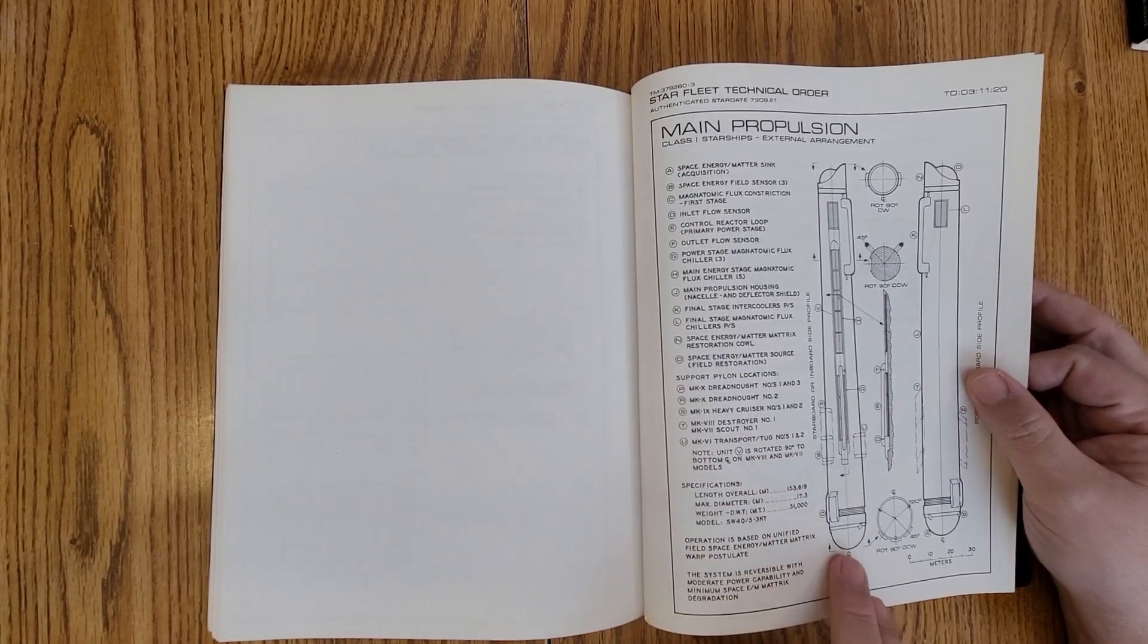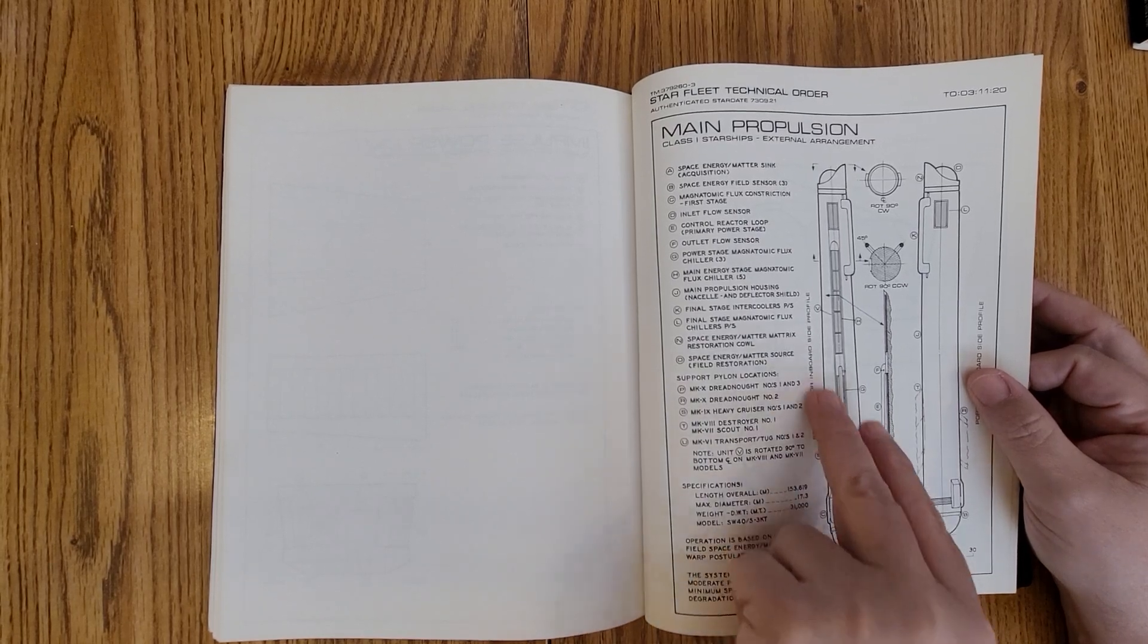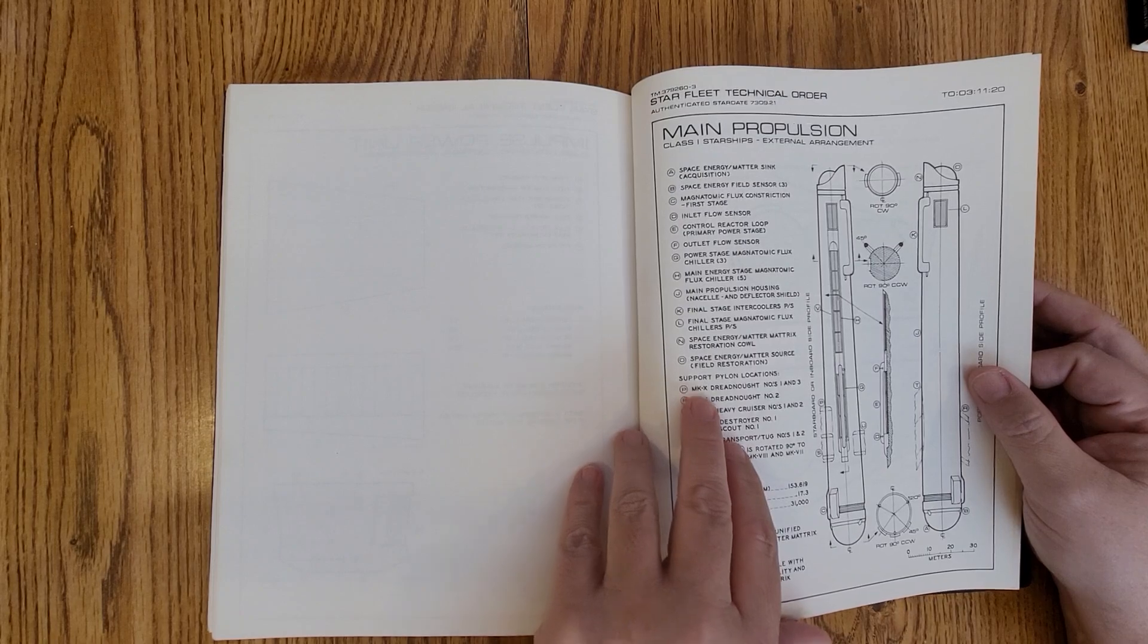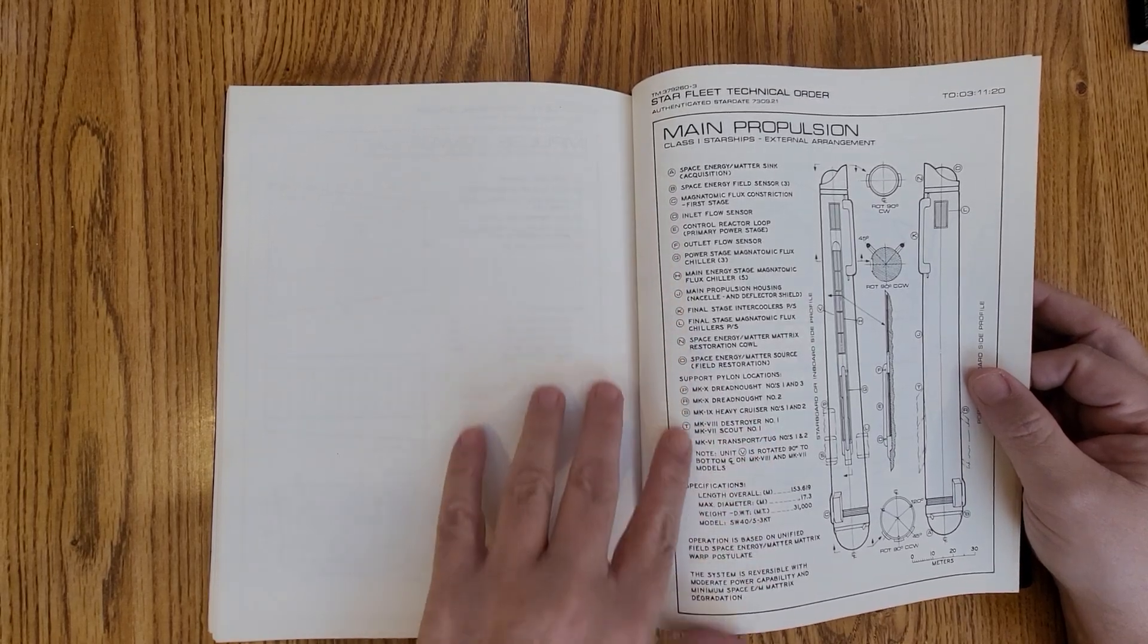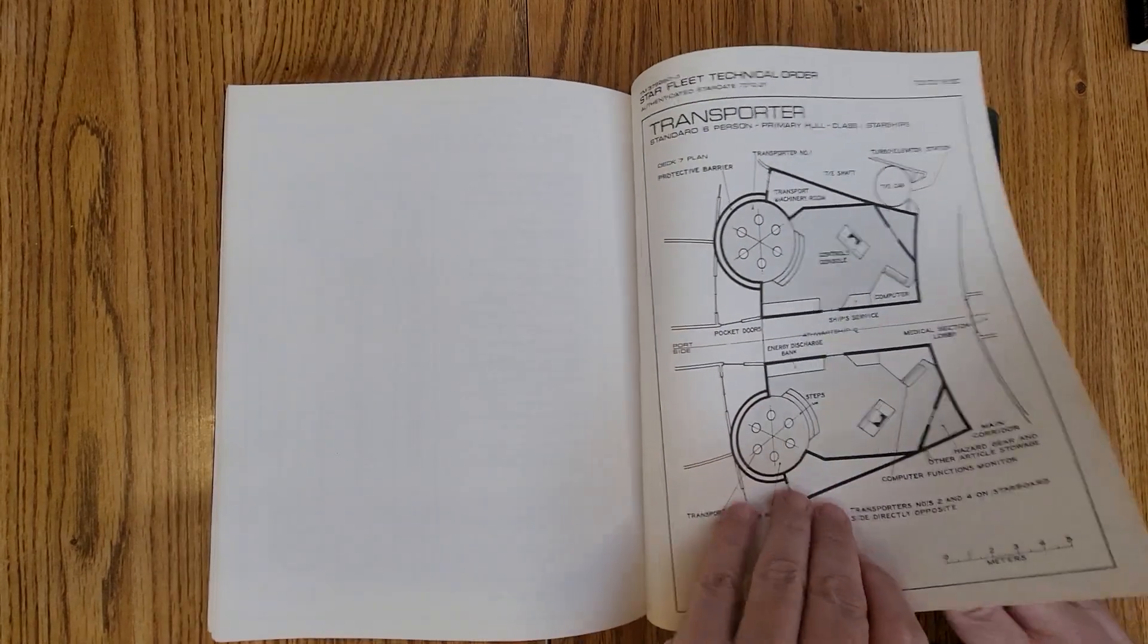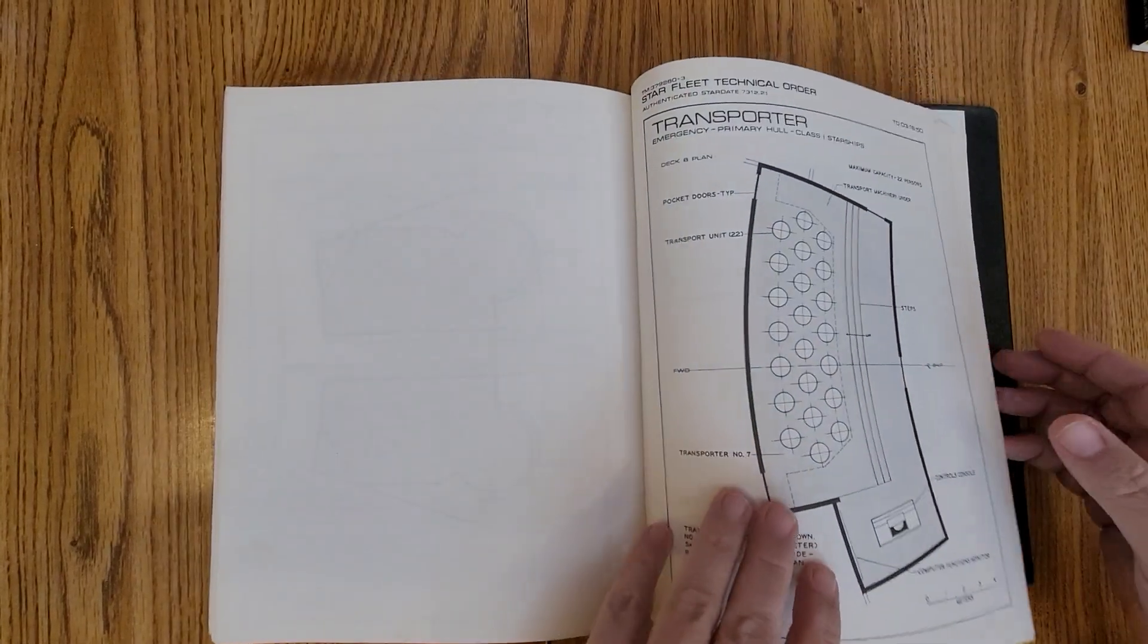Your propulsion units, it actually goes through like the Bussard collectors and all the information that's on it. And it even talks about which versions were on which ships. Like I said, any information that you want.